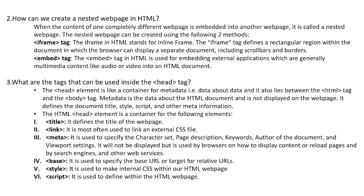The meta tag is used to specify the character set, page description, keywords, author of the document, and viewport settings. It will not be displayed but is used by browsers on how to display content or reload pages, and by search engines and other web services. The base tag is used to specify the base URL or target for relative URLs. The style tag is used to make internal CSS within our HTML web page. The script tag is used to define scripts within the HTML web page.